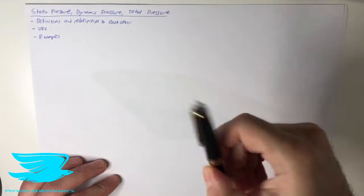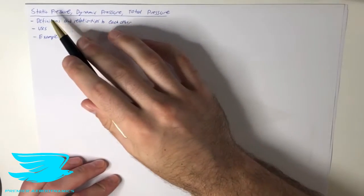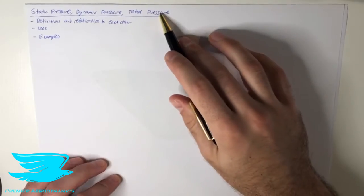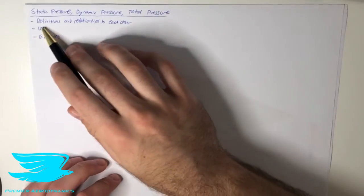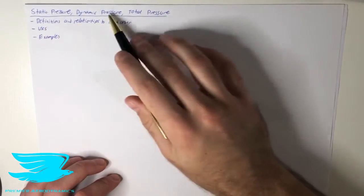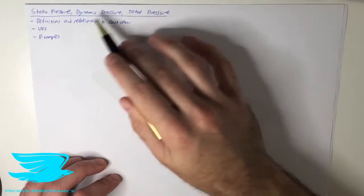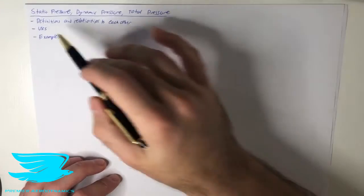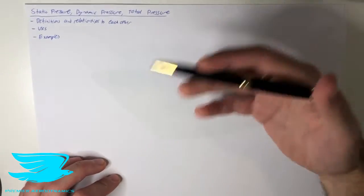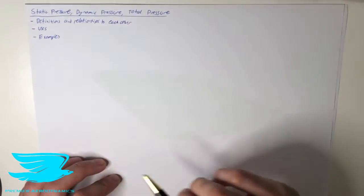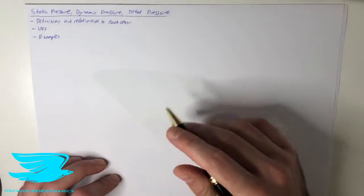What is up amigos? Today we're talking about static pressure, dynamic pressure, and total pressure. We'll be going through what the definitions of each one are, the relationships between them, and their uses — so when do we use them and why. And we'll be looking at some examples as well.